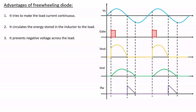The third advantage is that it prevents negative voltage across the load. Previously with an RL load alone, the voltage would go negative during the negative half cycle. In this case it goes to zero, which is better because the average output voltage is not reduced — any waveform going negative would affect the overall average output voltage. The fourth important observation is that it helps in commutation of SCRs by imposing a reverse voltage across them. With the help of the inductor, we are able to turn off the thyristor. As a result, the SCR gets turned off through the commutation process by the reverse voltage generated from the energy stored in the inductor, according to Lenz's law.